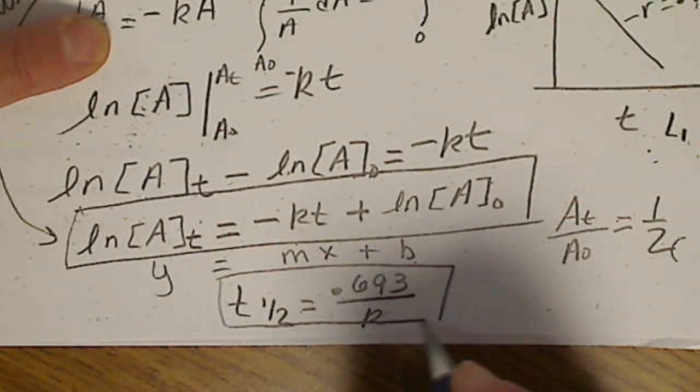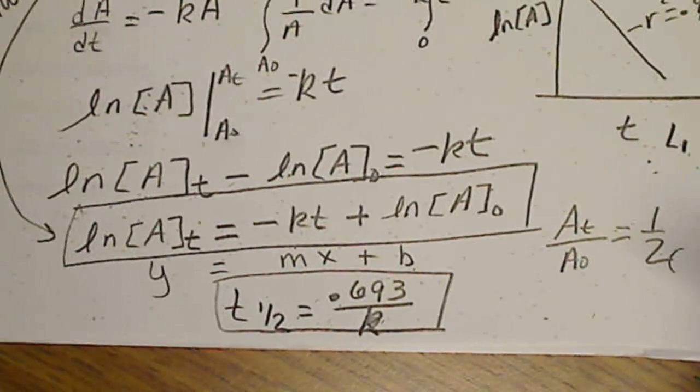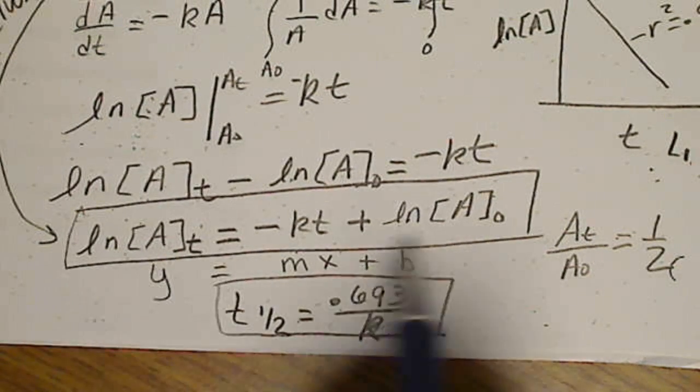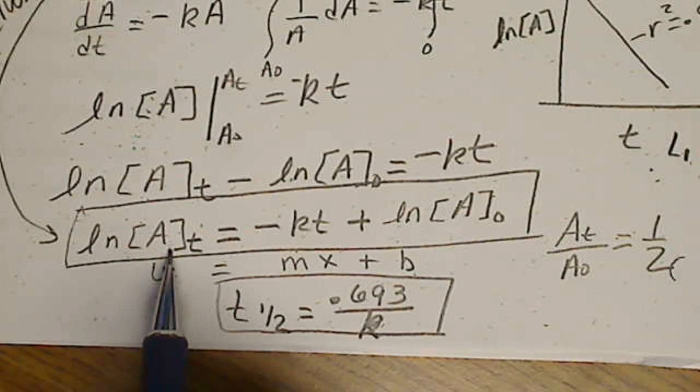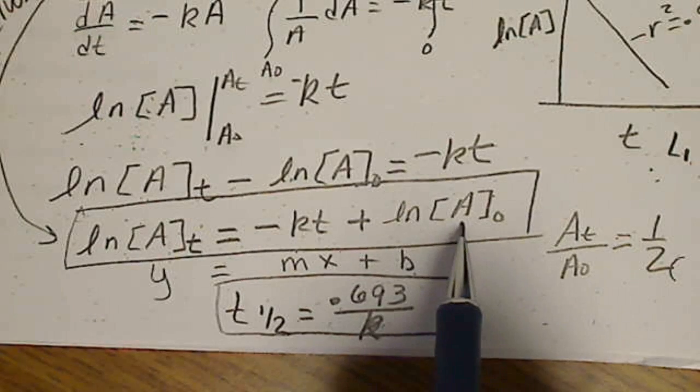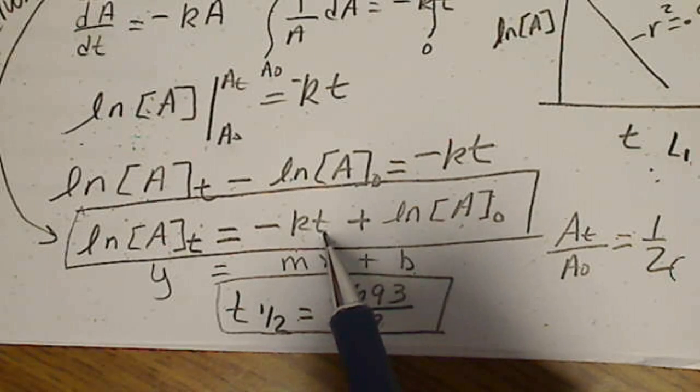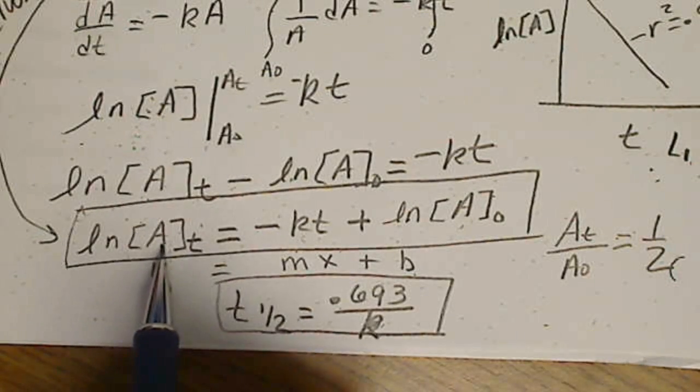So if we happen to get a first order reaction, this is the first order instantaneous expression. We can solve for any concentration, as long as we know the time, and the initial concentration, and the rate constant. Or we could solve for how long it took, time, to get from this concentration to that concentration.